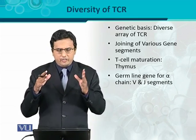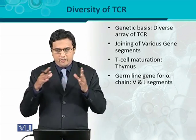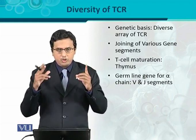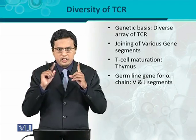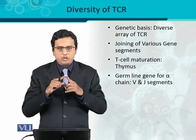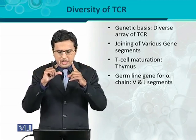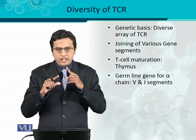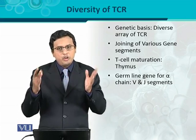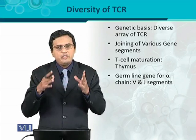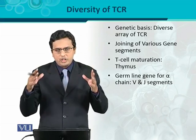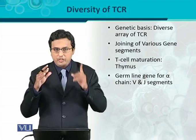The germline gene for the alpha chain — because, as we discussed in the structure of the TCR, there are two chains, alpha and beta, forming a heterodimer — for the alpha chain, there are two segments: the V and J segments. V stands for variable and J stands for joining. So, two segments are present for the alpha chain: V and J.